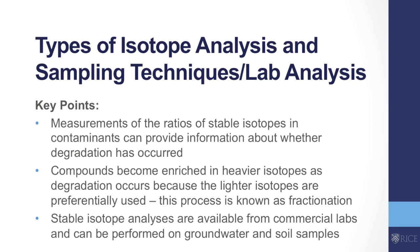Let's wrap up with some key points. Measurements of the ratios of stable isotopes in contaminants can provide information about whether degradation has occurred. These compounds become enriched in heavier isotopes as degradation occurs because the lighter isotopes are being preferentially used — this process is known as fractionation. Stable isotope analyses are available from commercial labs and can be performed on groundwater and soil samples.